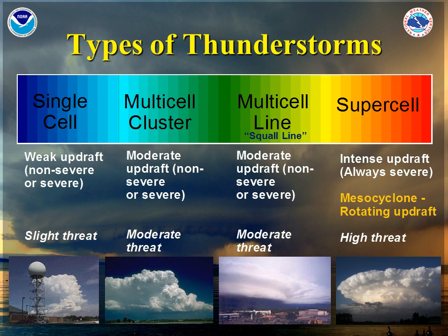We begin with the basic single cell storm, which has a weak updraft and just a slight threat for producing severe weather. The multi-cell cluster has a moderate threat for producing severe weather. The multi-cell line, better known as the squall line, also has a moderate threat. The supercell has an intense updraft and also a mesocyclone, which is a rotating updraft, giving it a very high threat for producing severe weather and even tornadoes.